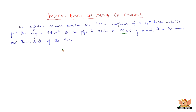How do we go about solving this? They have clearly mentioned the difference between the outside and inside surfaces of a cylindrical metal pipe, 14 cm long, is 44 cm². So the outside surface area minus the inside surface area gives 44 cm². Let the outer radius be capital R cm and the inner radius be small r cm. The outside surface area is 2πRH and the inside surface area is 2πrH.